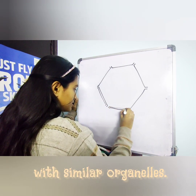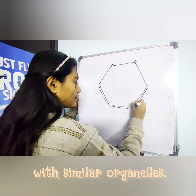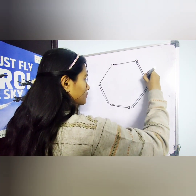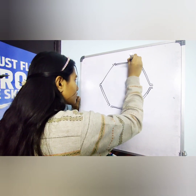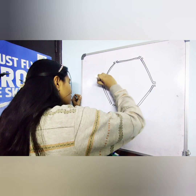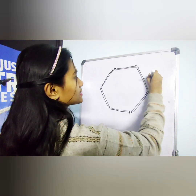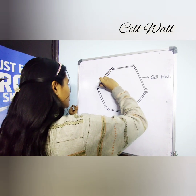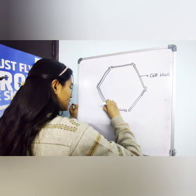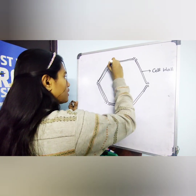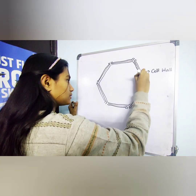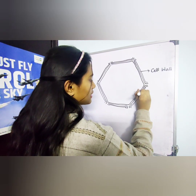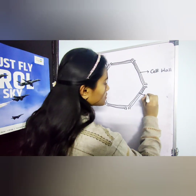The first layer that comes is called the cell wall. I'm making that right now. I've made six sides of my cell. This is the first layer which is known as the cell wall. Next, I'm going to have a membrane which is known as the plasma membrane. This layer protects the cell from all the harmful bacteria and microbes that can enter. It is known as a selectively permeable membrane because it allows the in and out of only selective substances. It's called plasma membrane.